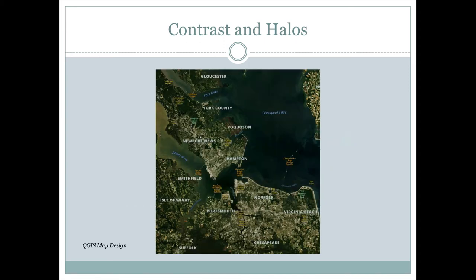We don't have to have sharp halos. This is an example from QGIS map design where they do include halos, but then fade them out in the background so that contrast only occurs where it's most needed. For example, in Hampton here you can see kind of a green halo around that. But there's part of Newport here which also has that halo, but it's been faded so that in areas where the background is darker, it doesn't need that halo for legibility, and so it's faded away.